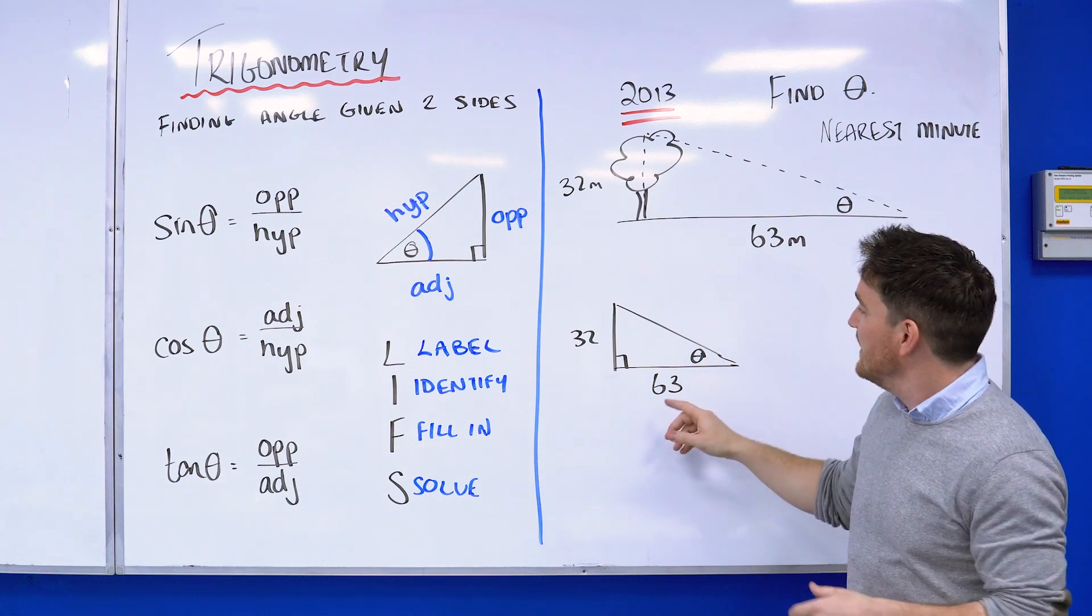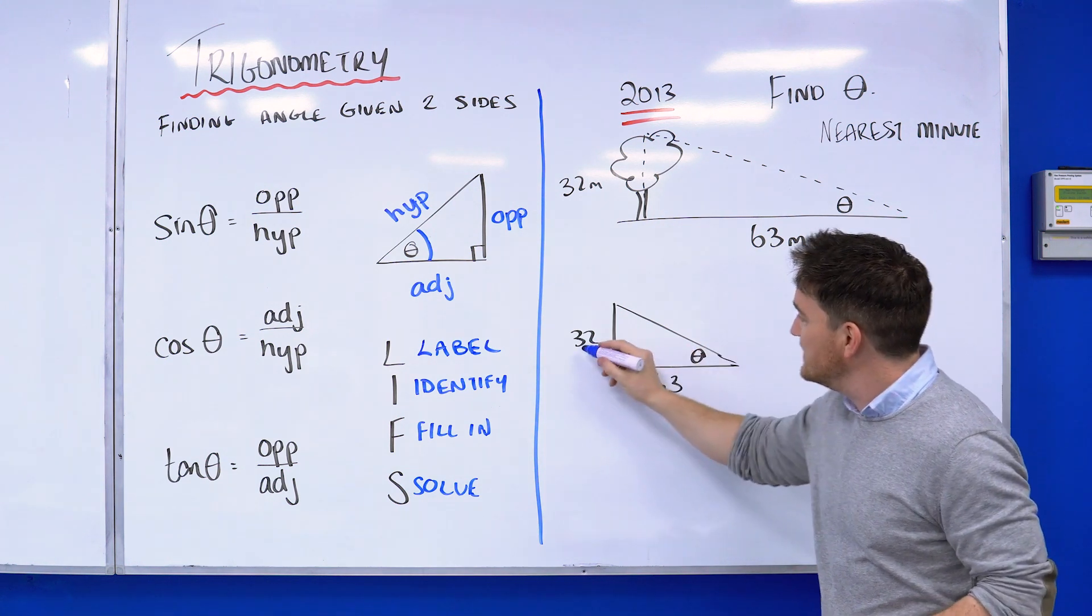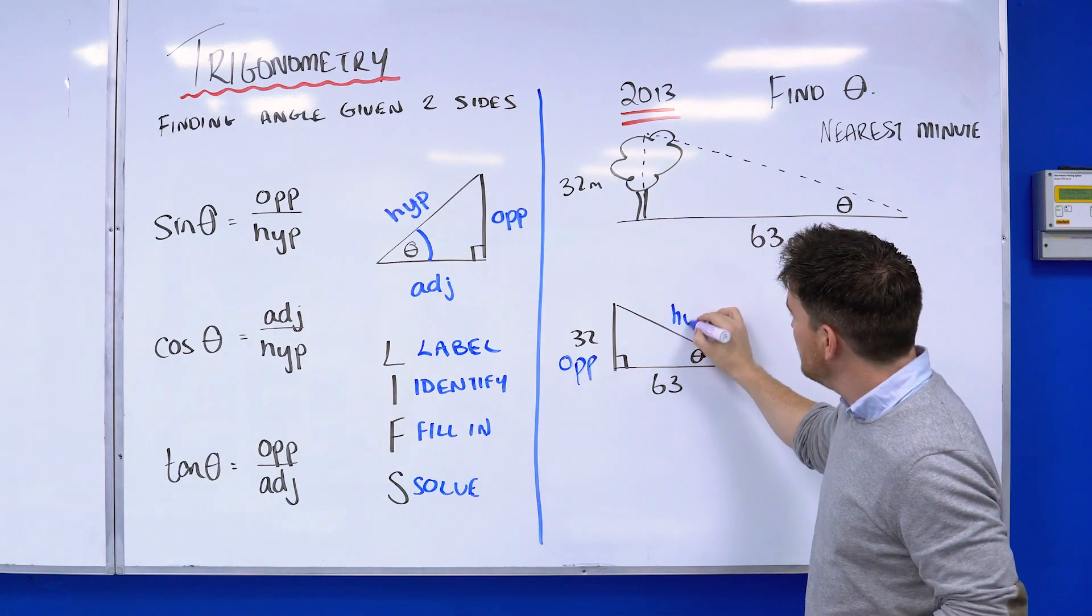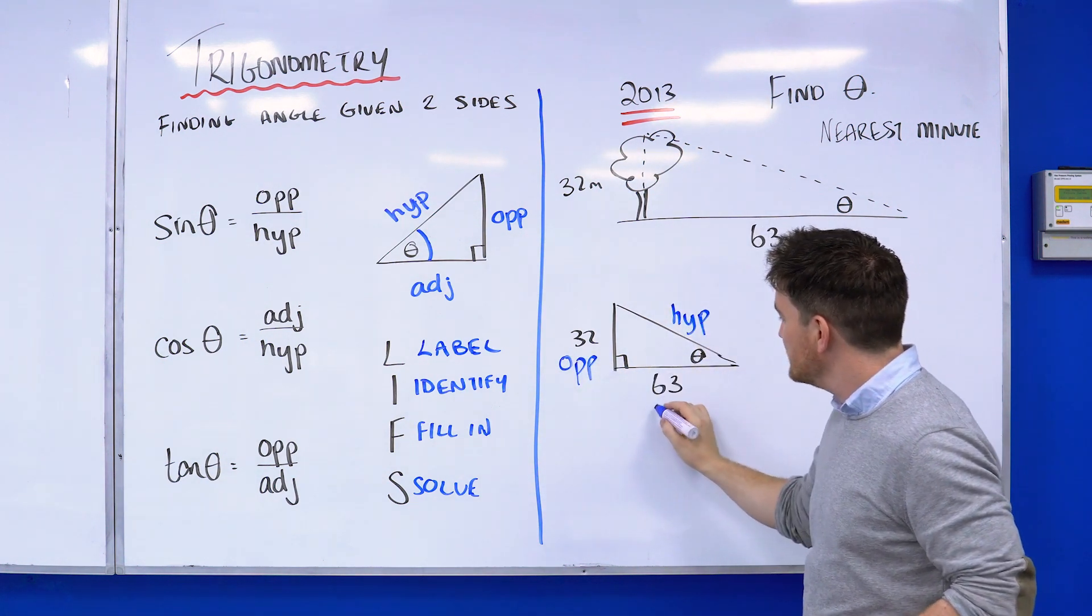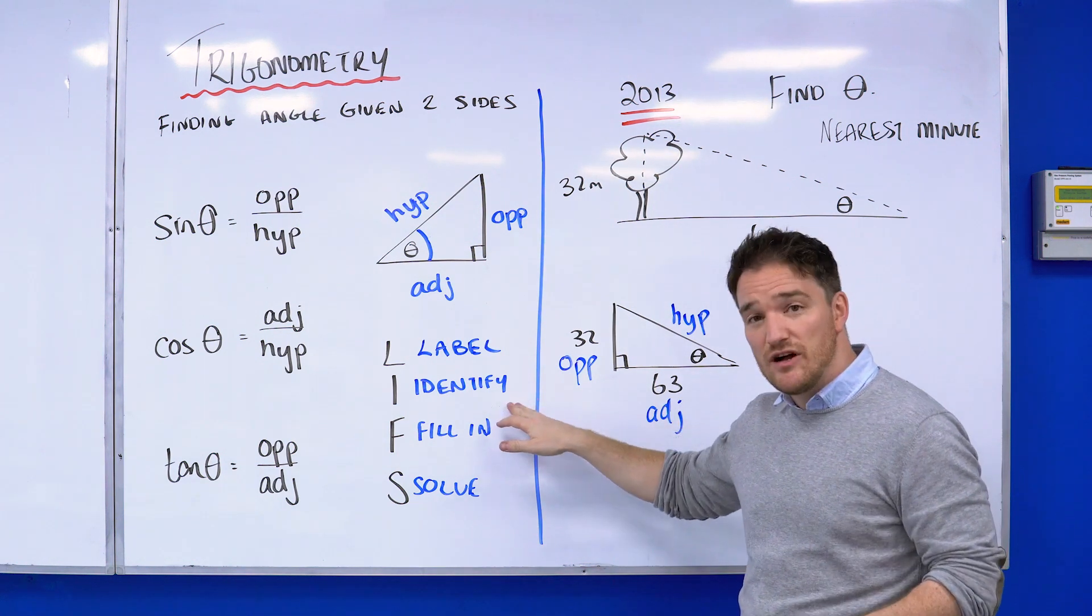First thing I'm going to do is my LIFTS—I'm going to label. If this is the angle, this side here, the 32, is the opposite. The longest side is my hypotenuse, and the remaining side is my adjacent. I've labeled it, I've labeled it correctly.